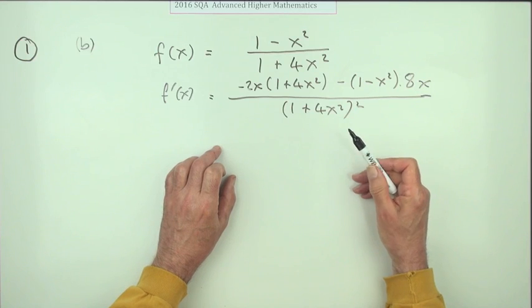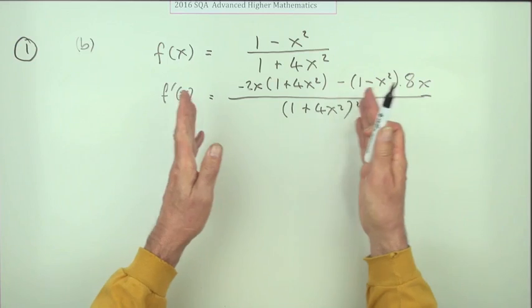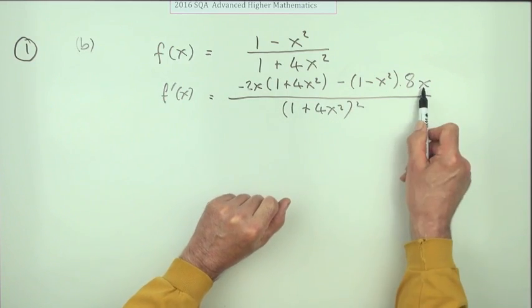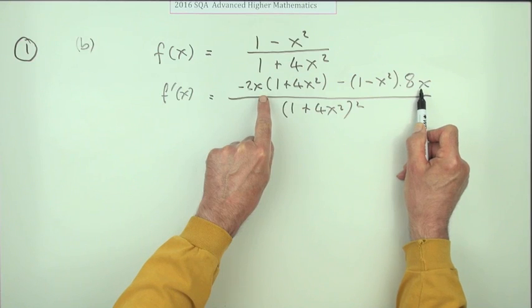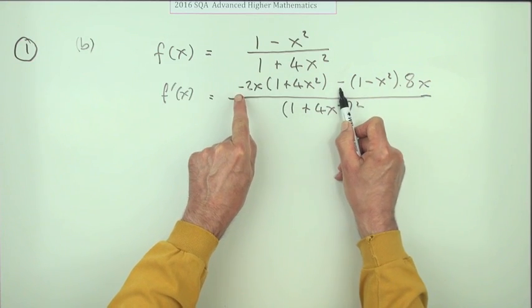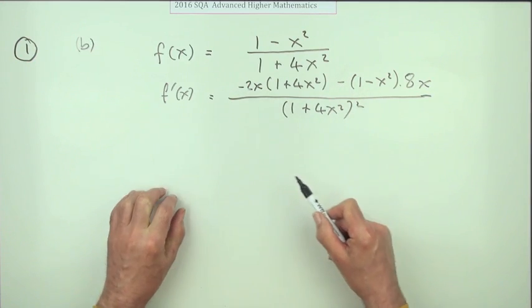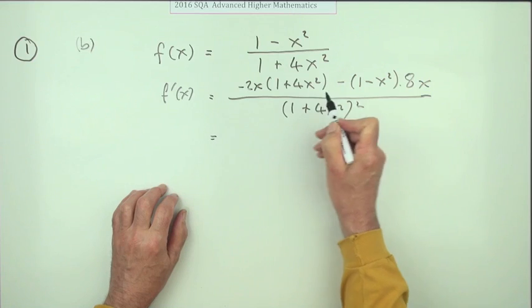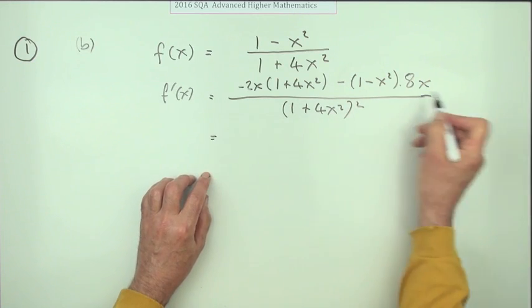Now it said simplify. Normally you'd be tempted into thinking, I'll take out the common factors on the top: there's a common factor of x, there's a common factor of 2, there's a common factor of negative 1. You could take out negative 2x, but there's only four terms, so I think I'll just multiply them out.